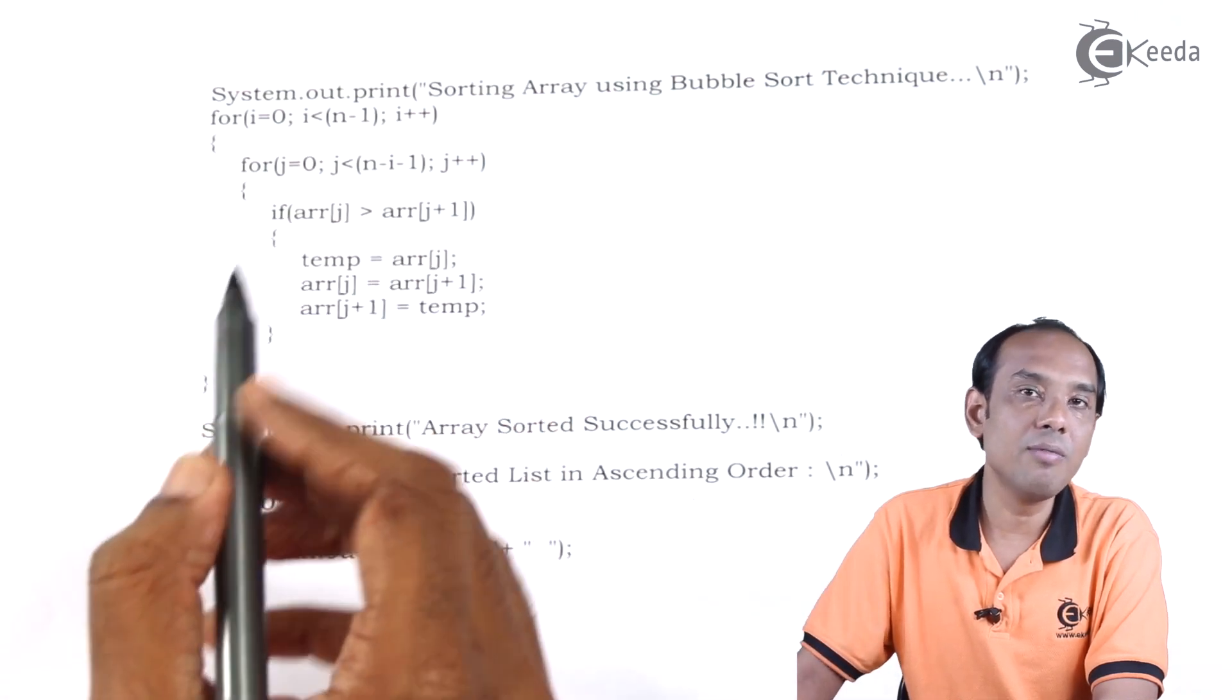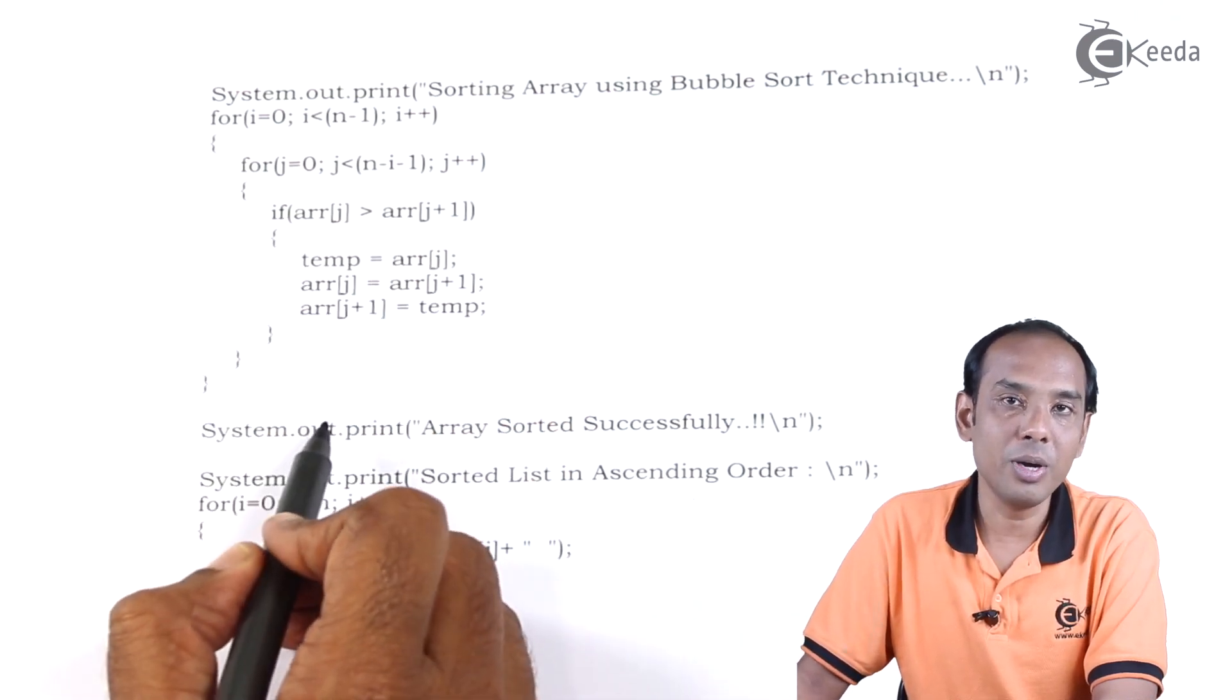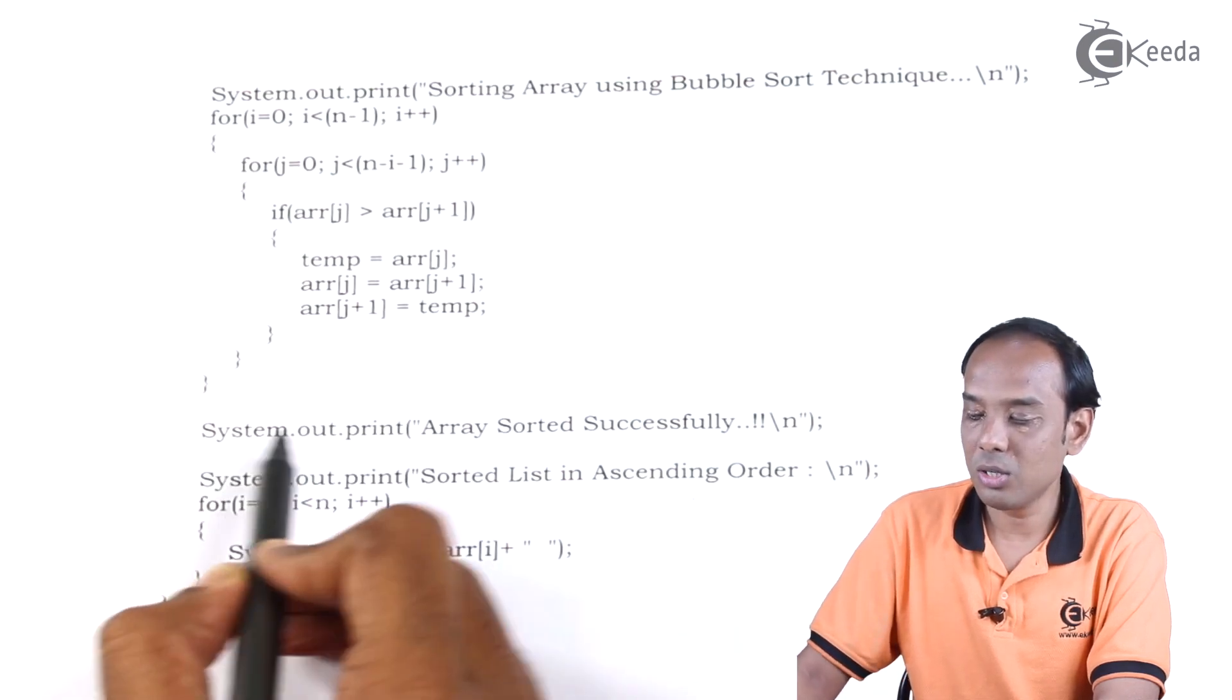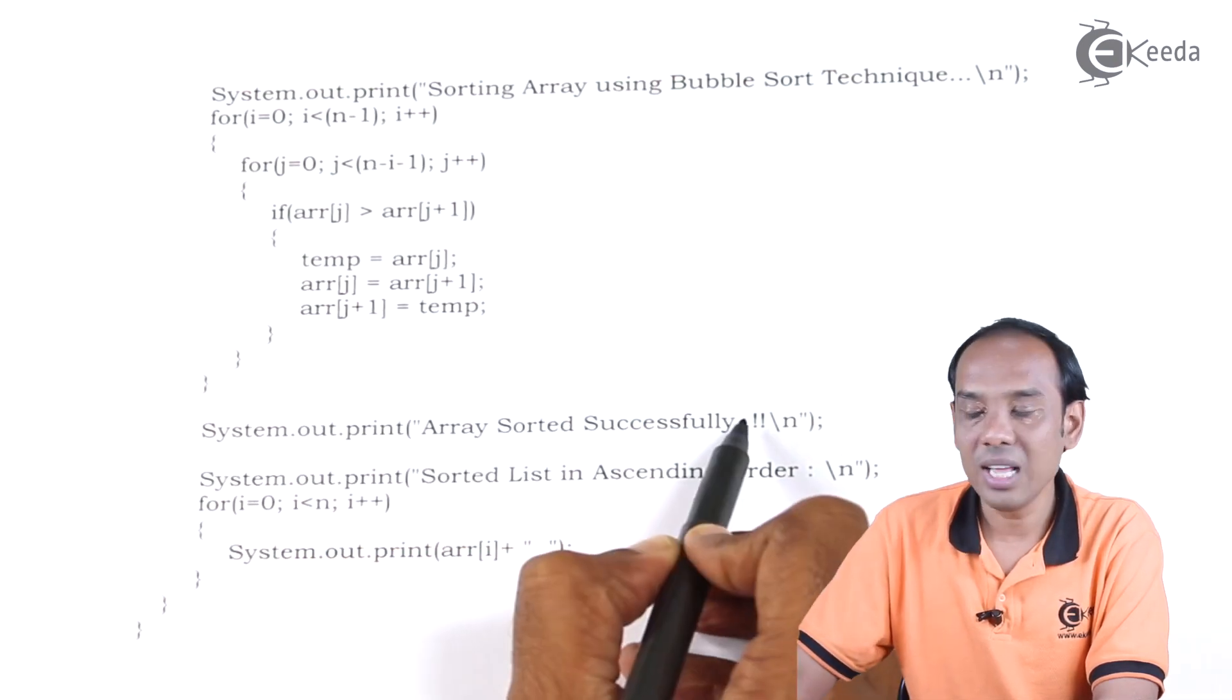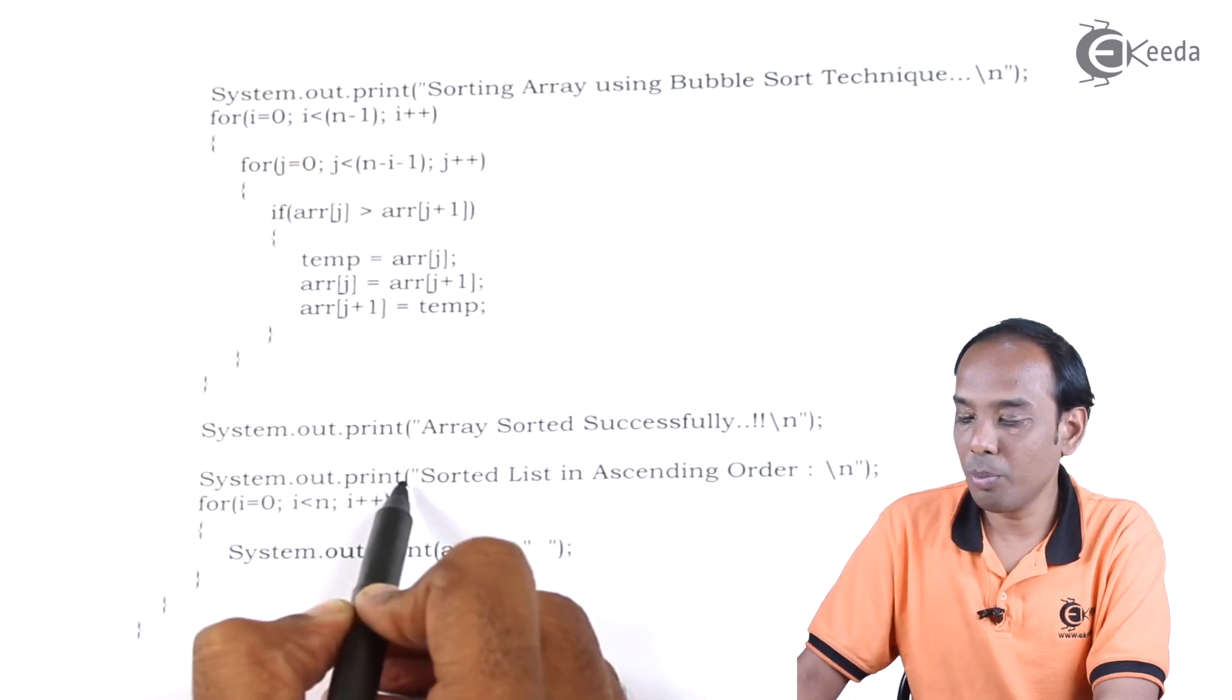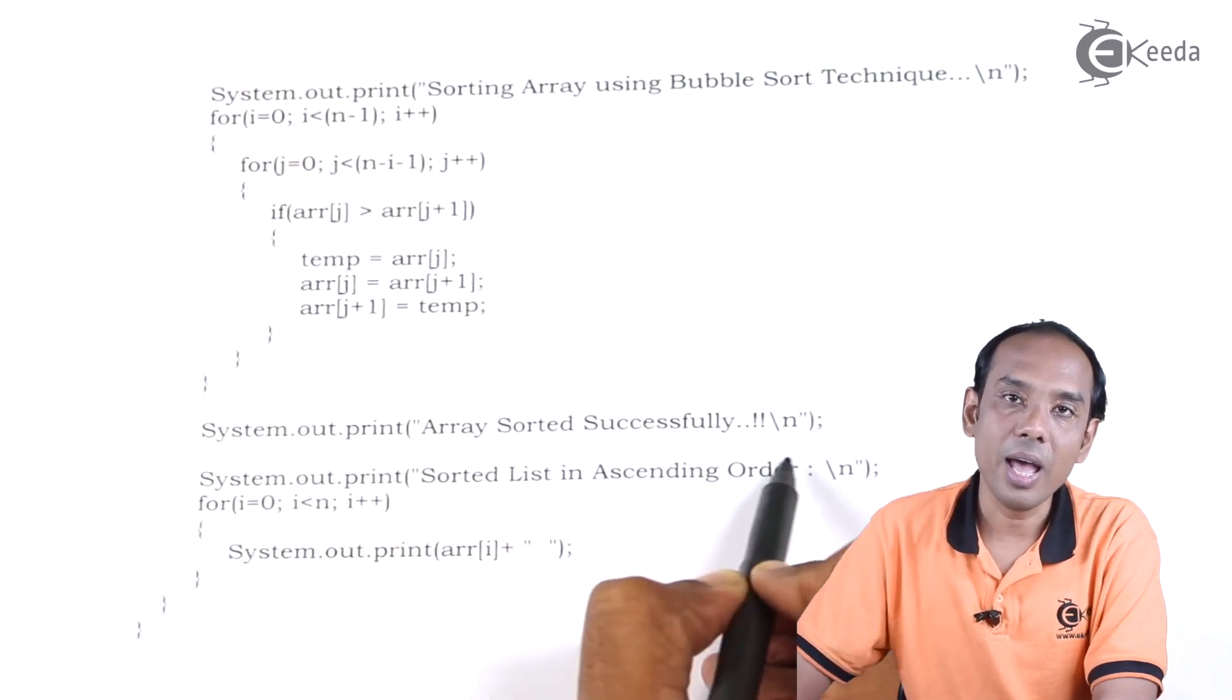Once this is done, then we have to display the elements in ascending order. For this I have written system.out.print array sorted successfully. System.out.print sorted element in ascending order.